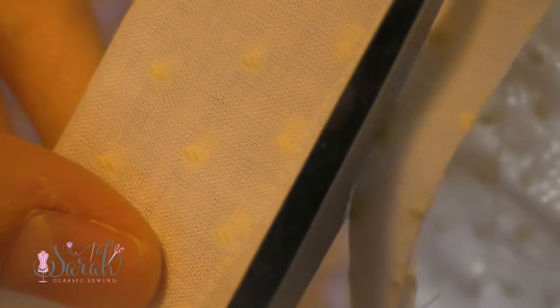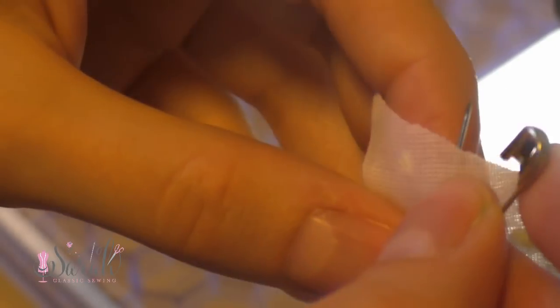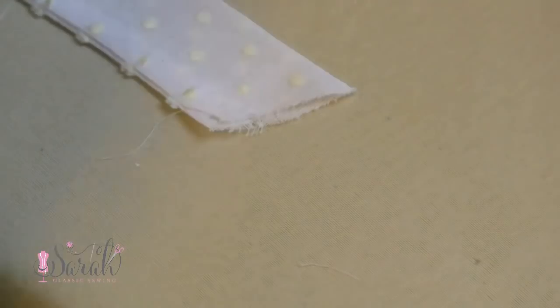Then you can trim up that seam and turn the suspenders right sides out using a safety pin. Then you'll baste the suspenders in place where you like them before joining the shoulders of the shirt together.